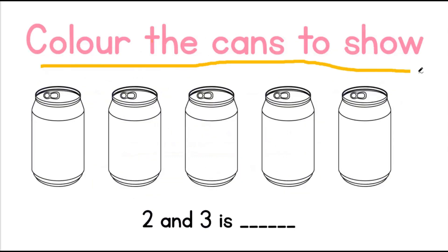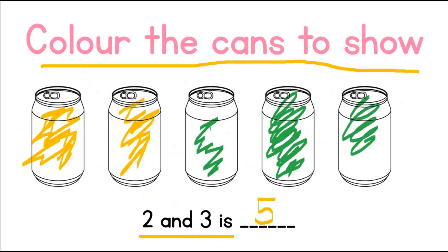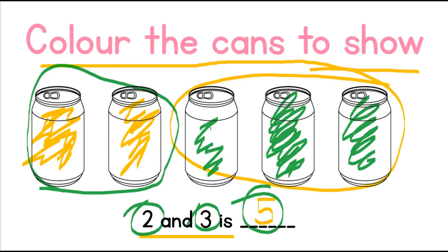Colour the cans to show 2 and 3 is equal to 5. That means we will be using 2 colours. 1, 2, and 1, 2, 3. This means that 2 and 3 make 5 because we have 2 yellow cans and 3 green cans. All together, we have 5.